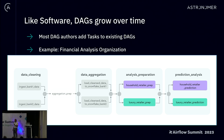Most DAG authors tend to add tasks to existing DAGs. In many cases, tasks are added to existing task groups because you process additional data files. One example is a financial services organization — a customer of Astronomer — who analyzes a ton of payment data from a variety of different sources: credit card data, bank data, and so on.